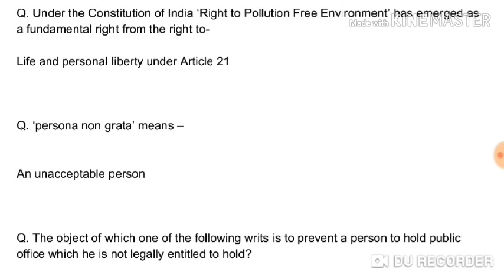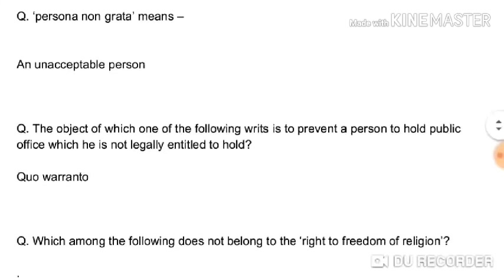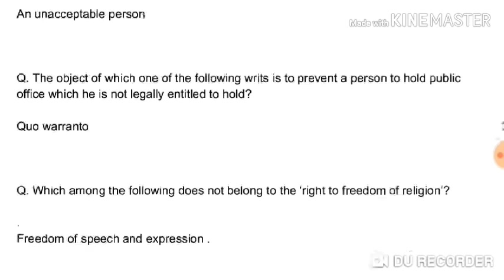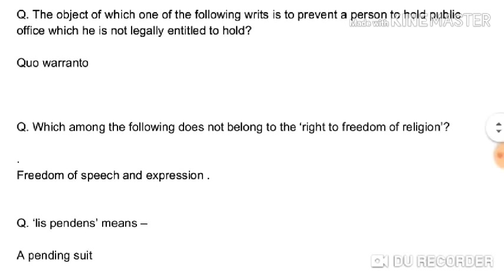Persona non grata means an unacceptable person. The writ whose object is to prevent a person from holding a public office which he is not legally entitled to hold is quo warranto. There are five types of writs — we will discuss them in a separate video. So quo warranto is the correct option for a person holding a public office illegally.